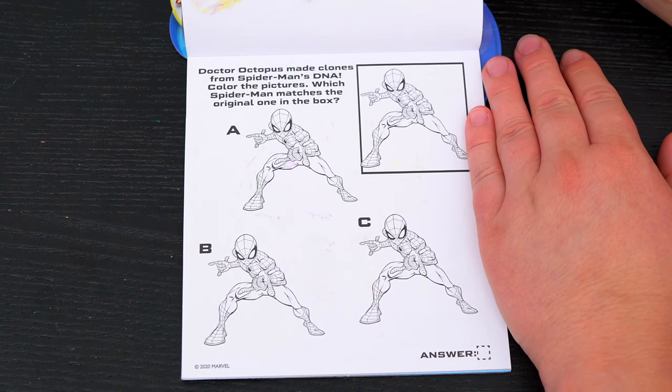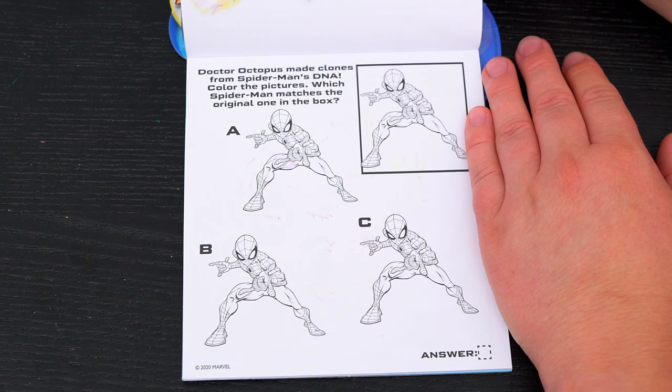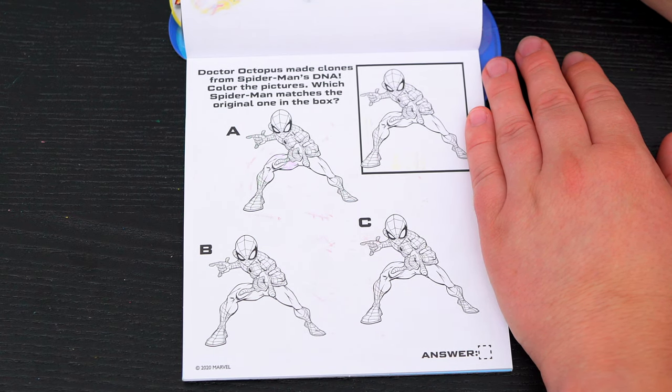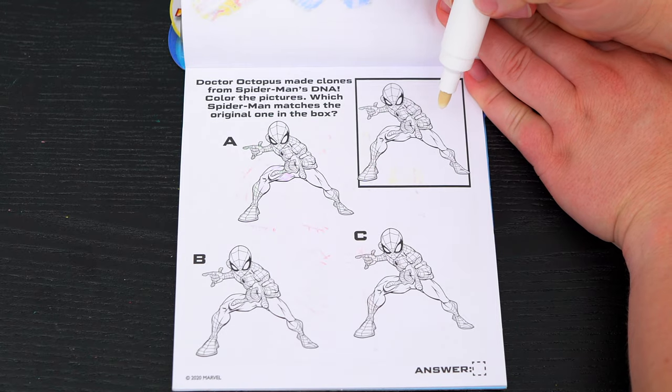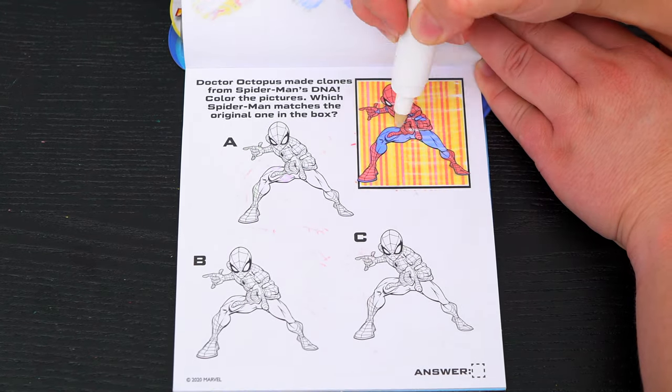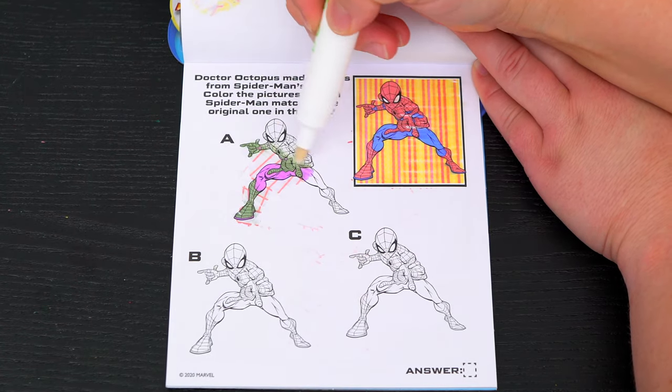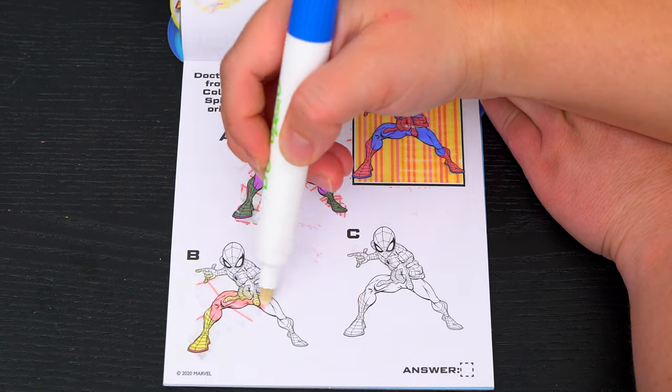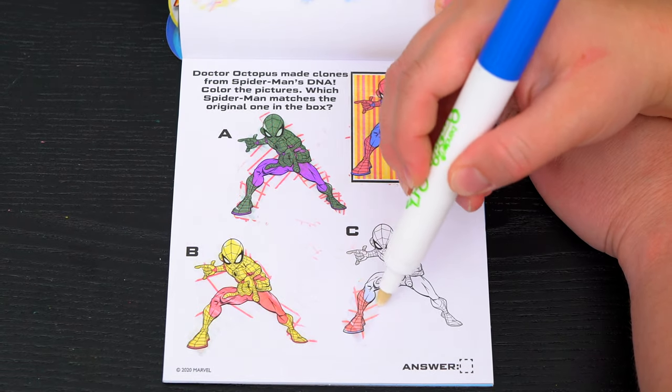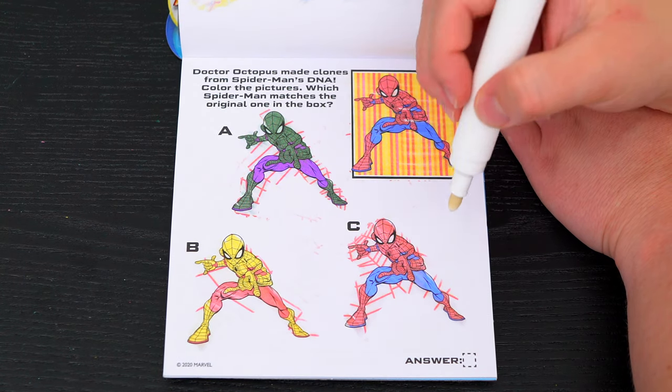Doctor Octopus made clones from Spider-Man's DNA! Color the pictures. Which Spider-Man matches the original one in the box? Okay, so this is the original one in the box. Now let's see which of these three matches. Okay, do you see which one it is? Yeah, it's C! Alright!